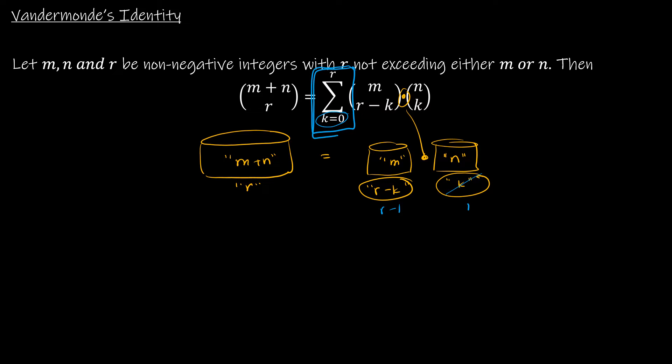And so the rule of sum comes into play because I have to take into account all of the different ways that I could choose k objects from here and r minus k objects from here. So hopefully that makes sense in terms of rule of product and then also rule of sum.